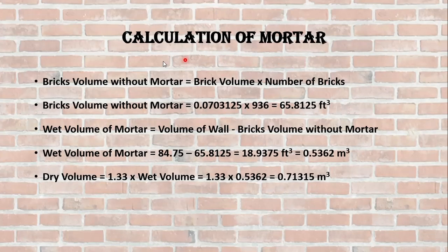Now we will calculate the mortar. For that, we have to calculate bricks volume without mortar first. Bricks volume without mortar equals a single brick volume without mortar multiplied by the total number of bricks. So it becomes 65.8125 cubic feet. This is the volume of total number of bricks used in the construction of wall. Now we can calculate the wet volume of mortar by subtracting the volume of bricks from the total volume of wall. So the wet volume of mortar would become 18.93 cubic feet, and in SI system it is 0.5 cubic meters. We can convert it by dividing with the factor 3.281 cubed.